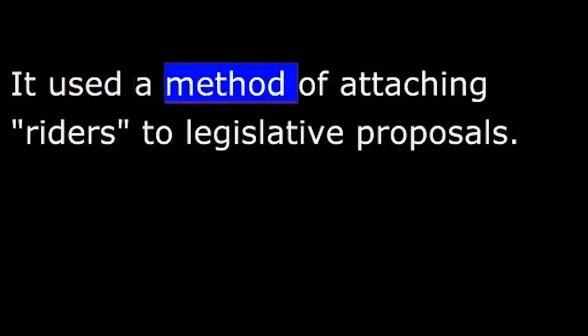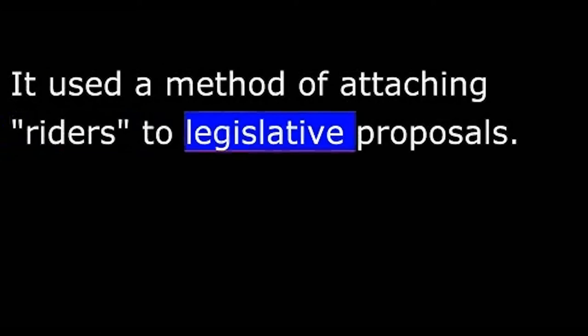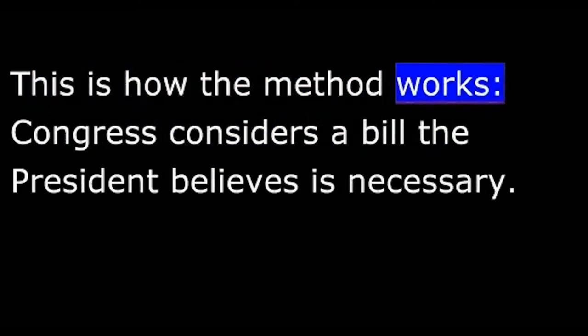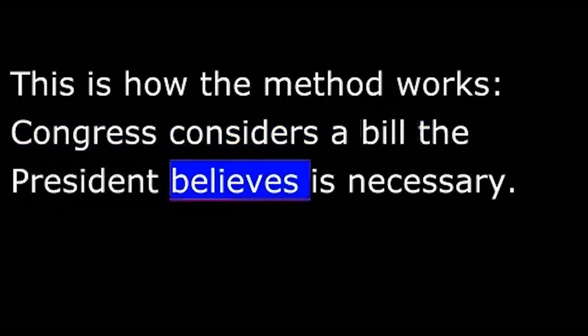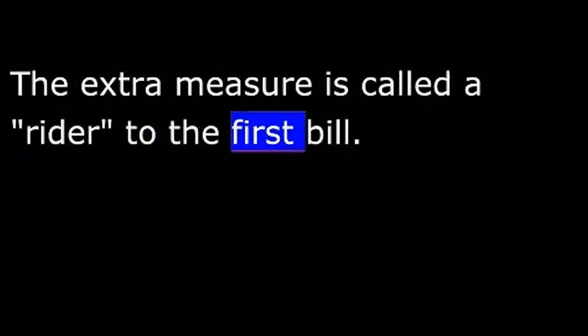It used a method of attaching riders to legislative proposals. This is how the method works: Congress considers a bill the President believes is necessary. Then, it joins that bill to a measure the President would veto if passed separately. The extra measure is called a rider to the first bill.